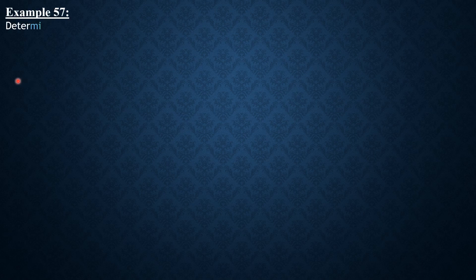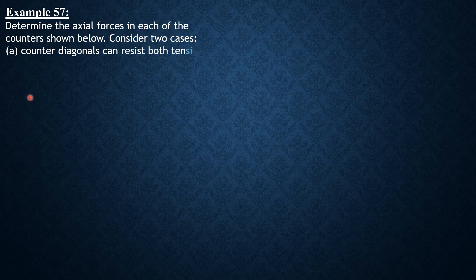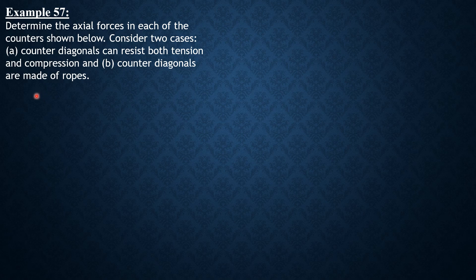Okay, Example 57 is about indeterminate truss, approximate analysis of indeterminate truss. Determine the axial forces in each of the counters shown below. Consider two cases: Case A, counter diagonals can resist both tension and compression, and Case B, counter diagonals are made of ropes.